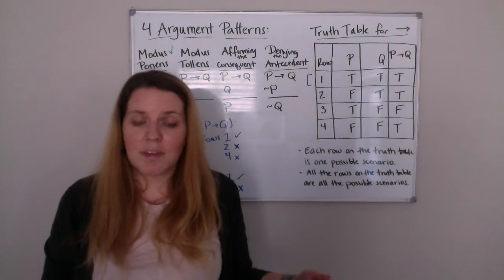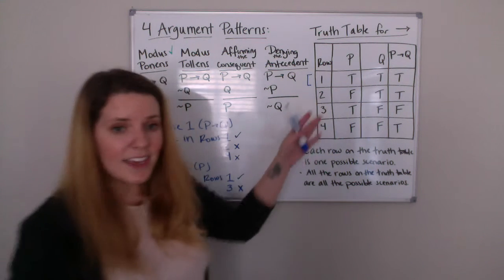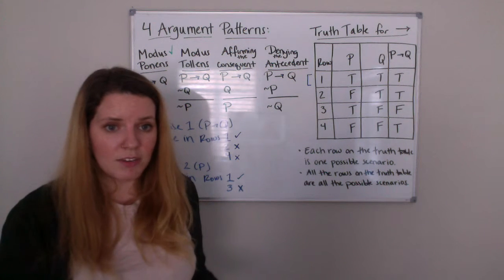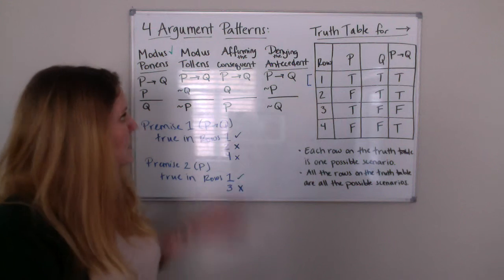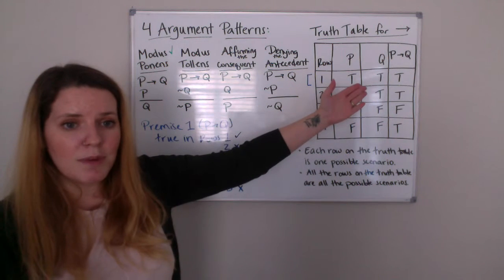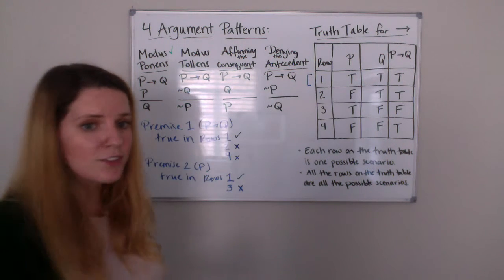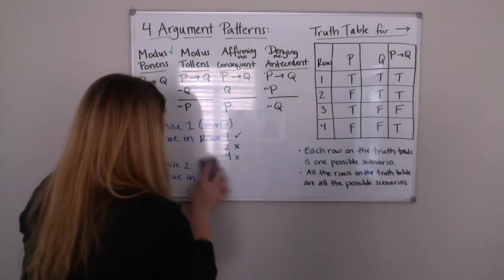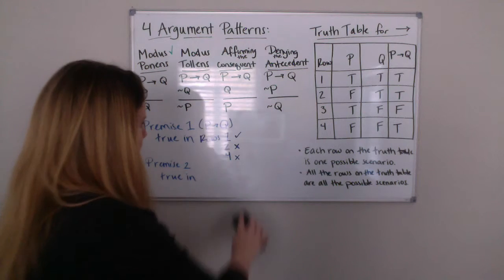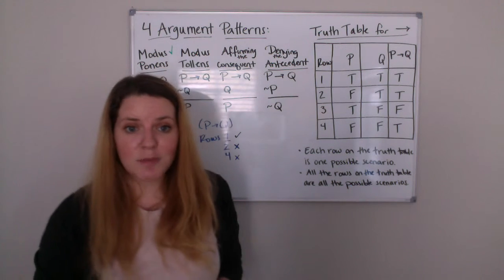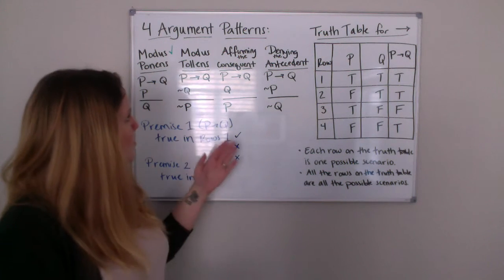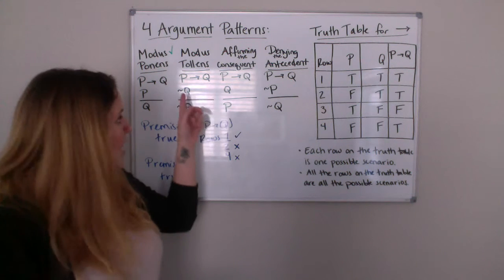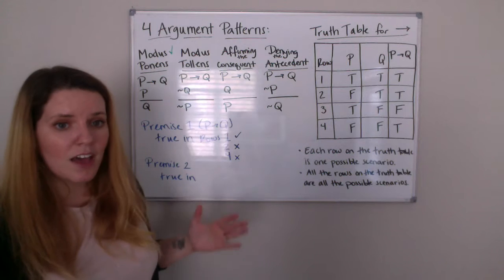Now, if in that row the conclusion had been false, that would mean the argument was invalid. That's what we're looking for in an invalid argument — a row where the premises are true but the conclusion is false. For a valid argument, when the premises are true, the conclusion is also true. Okay, let's move on to modus tollens. We can start moving a little bit faster, but we're still going to practice all of them. Modus tollens reads: if P then Q, not Q, therefore not P.